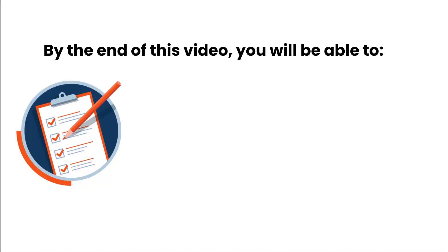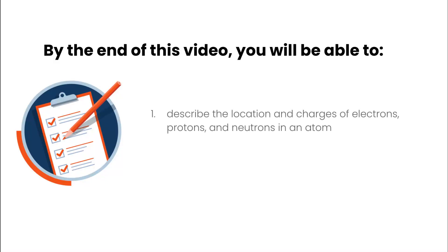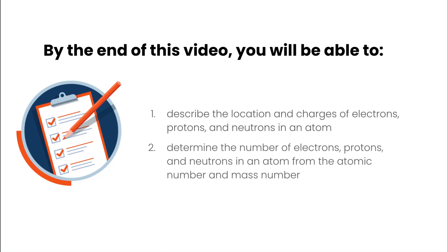In this video we're going to take a look at subatomic particles. By the end of this video you will be able to describe the location and charges of electrons, protons, and neutrons in an atom. You're also going to be able to determine the number of electrons, protons, and neutrons in an atom from the atomic number and mass number, which we will get from the periodic table.